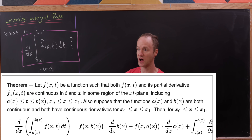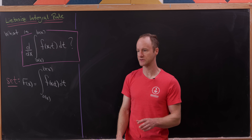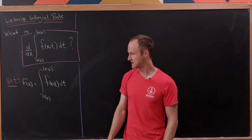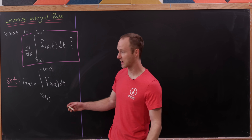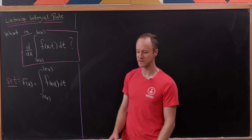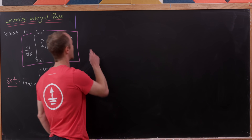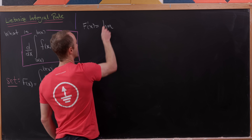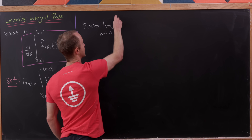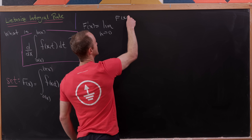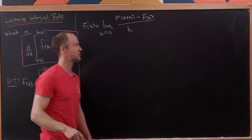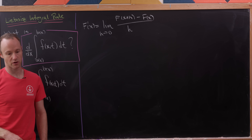Let's get to our derivation of this rule — I'll put the whole statement on the screen so you can see the hypotheses. Let's set capital F(x) equal to that integral that we want to differentiate, which means our goal is to find F'(x). We'll set that up with the limit definition of the derivative: the limit as h goes to zero of F(x+h) minus F(x) over h.